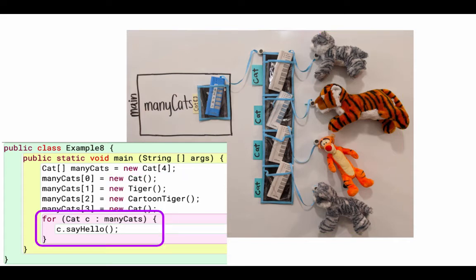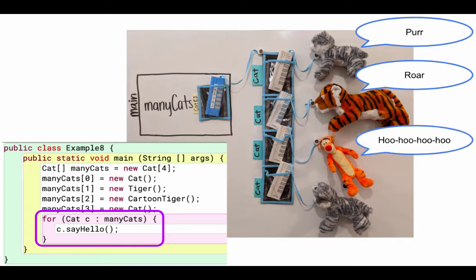Then when we loop through those arrays, we're going to call say hello on each of those objects. And you might remember from the cat, tiger, and cartoon tiger code that the cat will say purr, the tiger will say roar, the cartoon tiger will say hoo-hoo-hoo-hoo, and the cat will say purr. And that variable C that we were using to call say hello, that variable was of type cat.